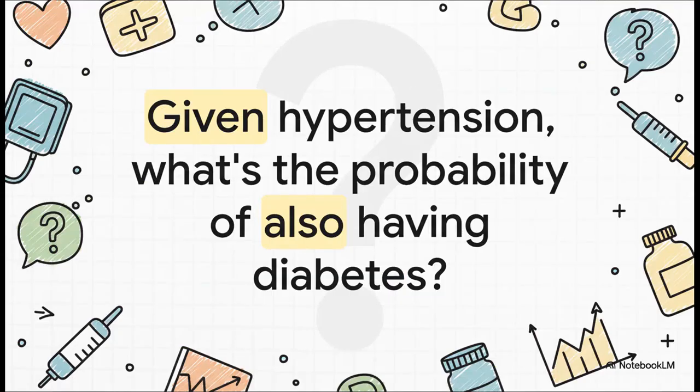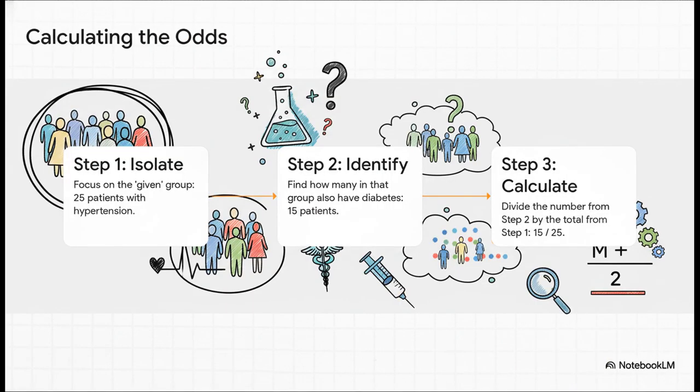So, here is our conditional question. Given that we know a patient has hypertension, what's the probability they also have diabetes? Notice what happened. We're not looking at all 100 patients anymore. Our world just got a lot smaller. We're only looking at a specific slice. And the logic is actually pretty simple.